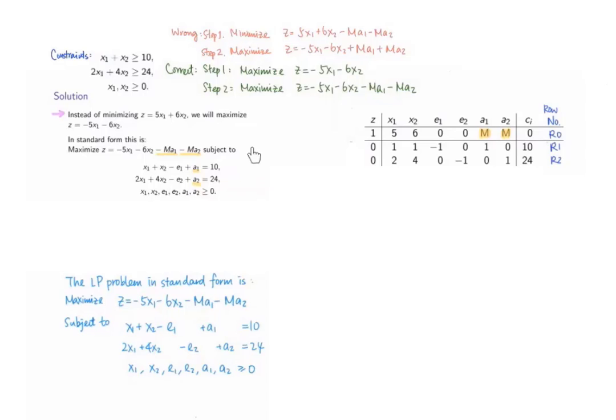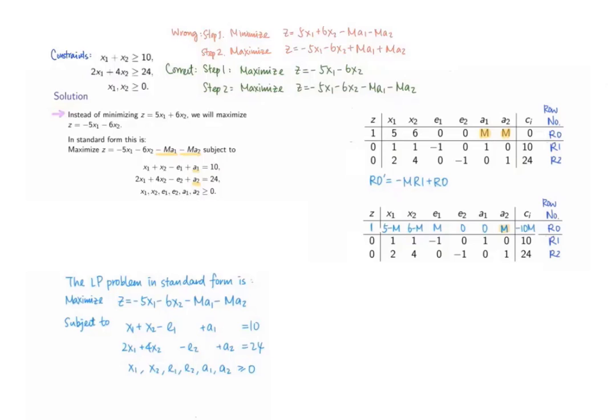Let us proceed with this system which has been written in the standard form and we represent it in the tabular form as follows. We have two M here for coefficients of a1 and a2 in the objective function. We need to make them zero one by one. First, we can add negative M times row 1 to the original row 0 to get a new row 0 as follows. This helps eliminating the big M here for the columns representing a1.